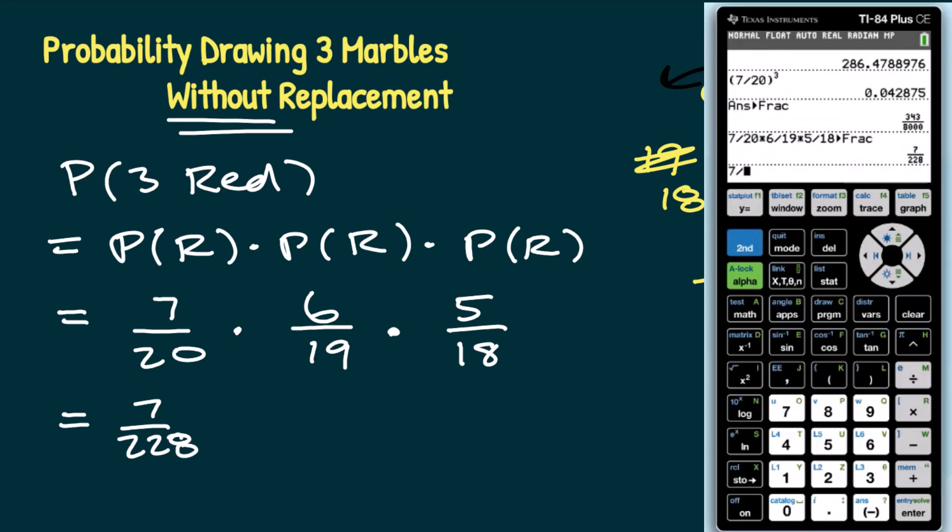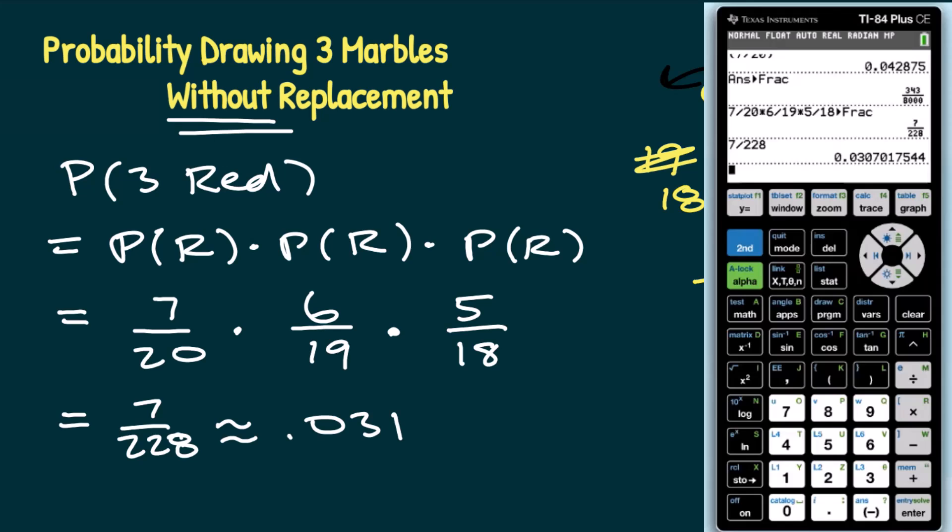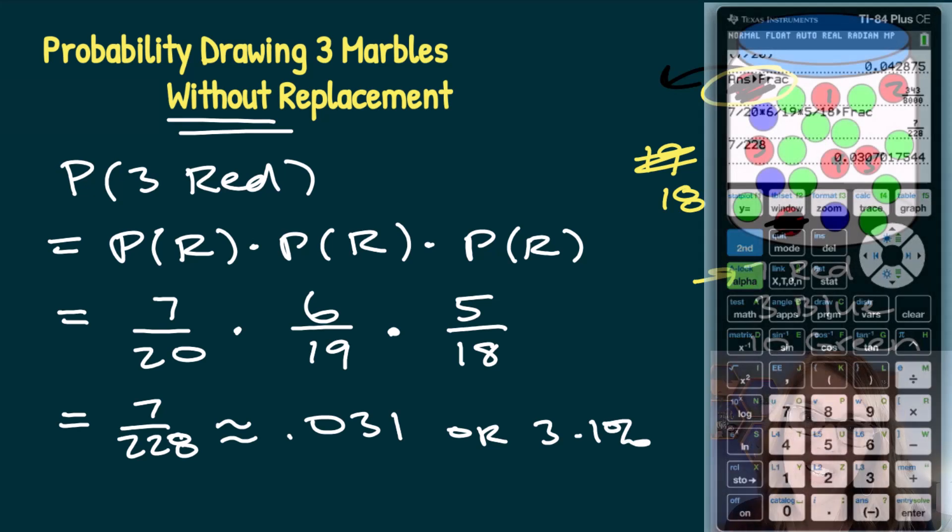If I type in that seven divided by 228 into my calculator and hit enter, I end up with that value as a decimal, I get 0.0307. Move that decimal, and we can write this as 3.1%.